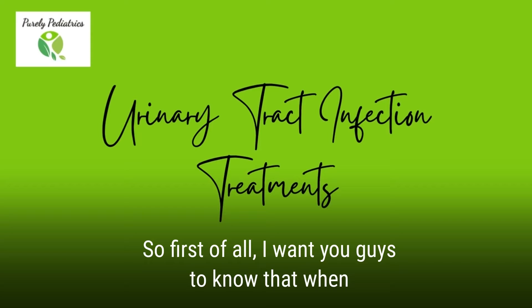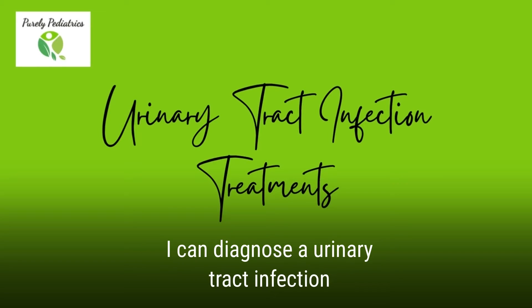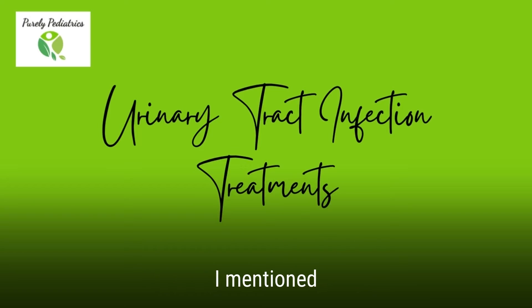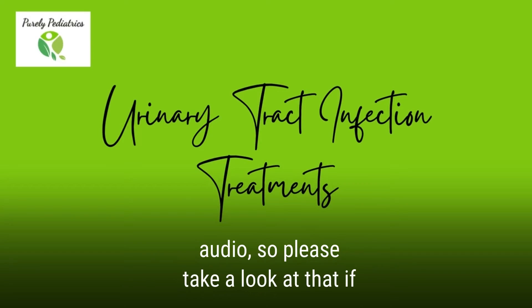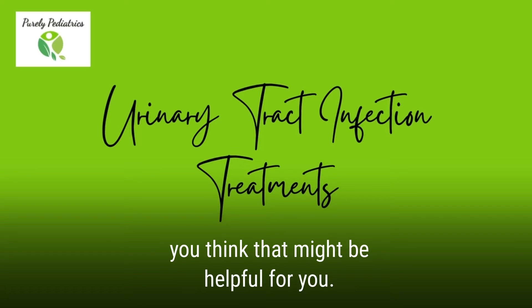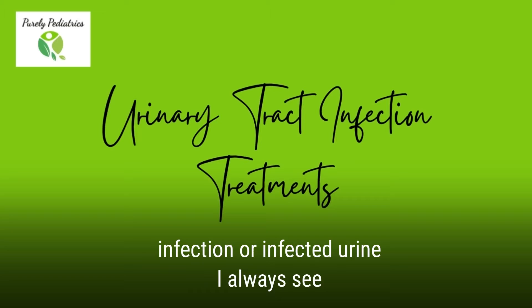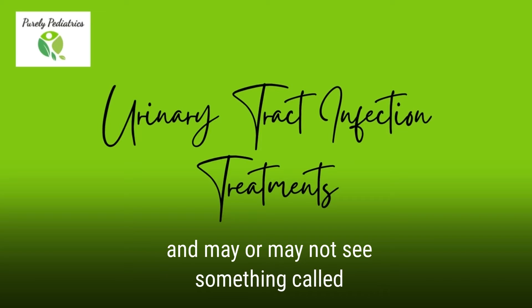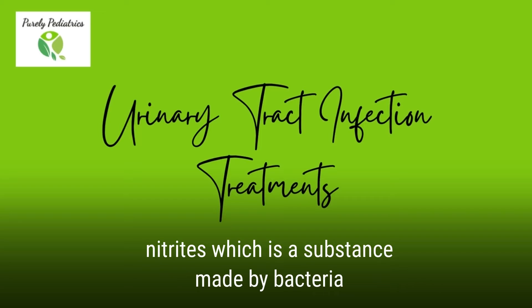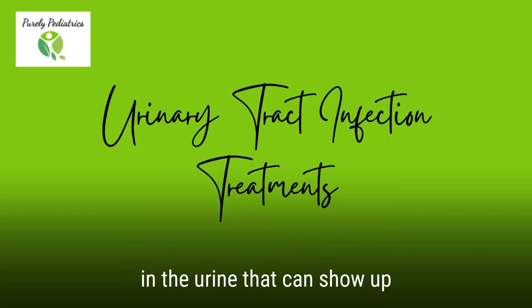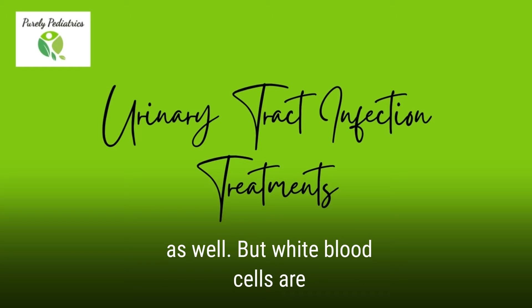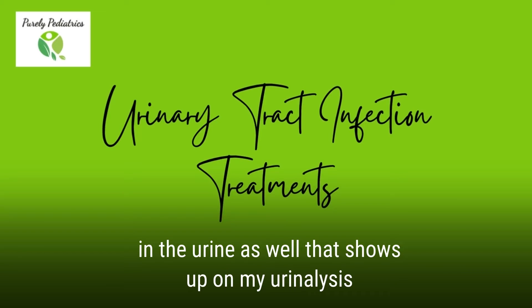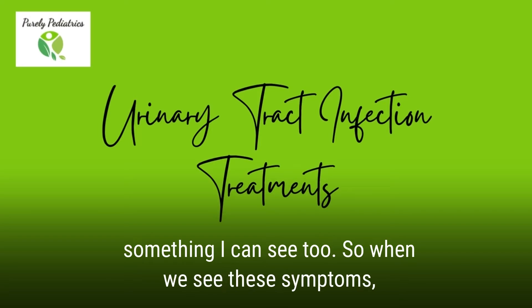When I diagnose a urinary tract infection, I always look at that urine to tell me what I'm seeing. I mentioned quite a bit about diagnosis in the previous audio, so please take a look at that if you think that might be helpful. When I see infected urine, I always see a significant amount of white blood cells and may or may not see something called nitrites, which is a substance made by bacteria in the urine. But white blood cells are always my key. Sometimes I'll see blood in the urine as well on my urinalysis that may not be visible to the eye.